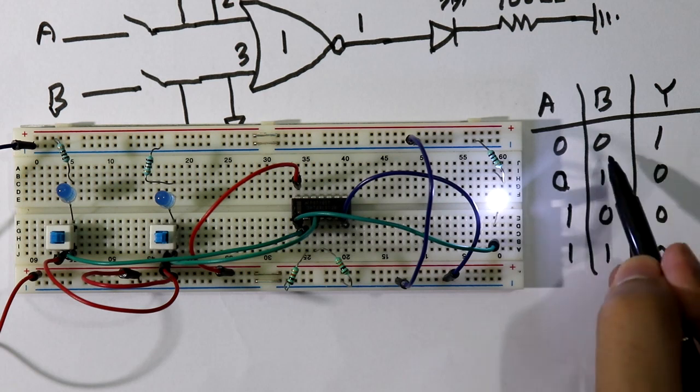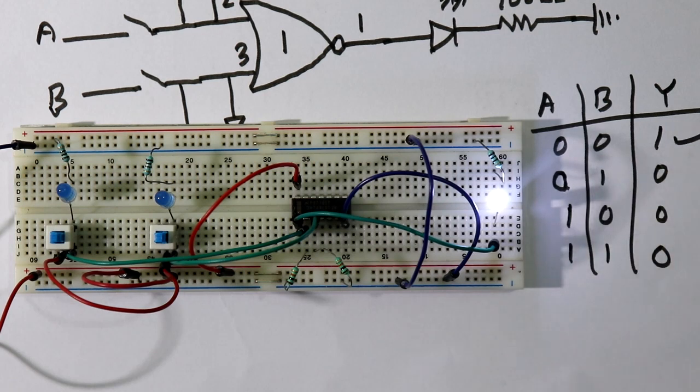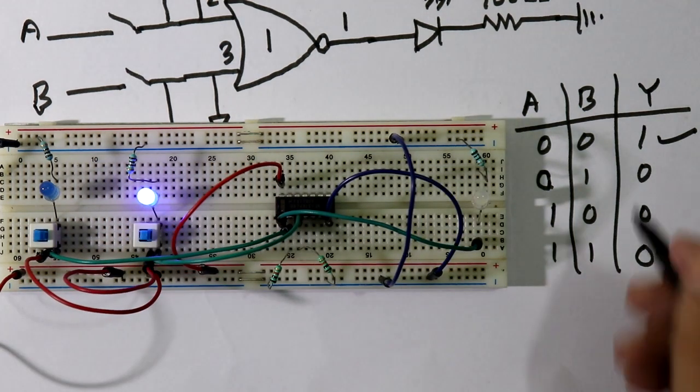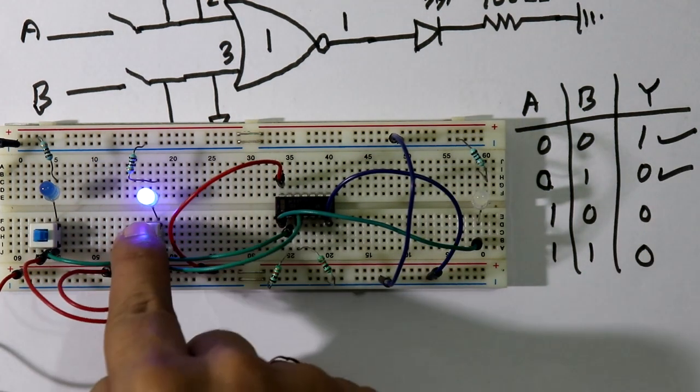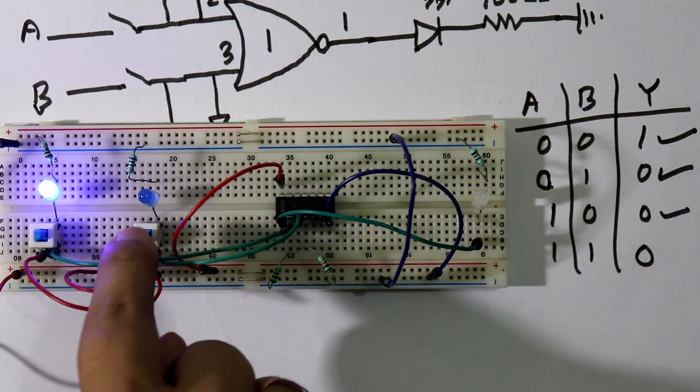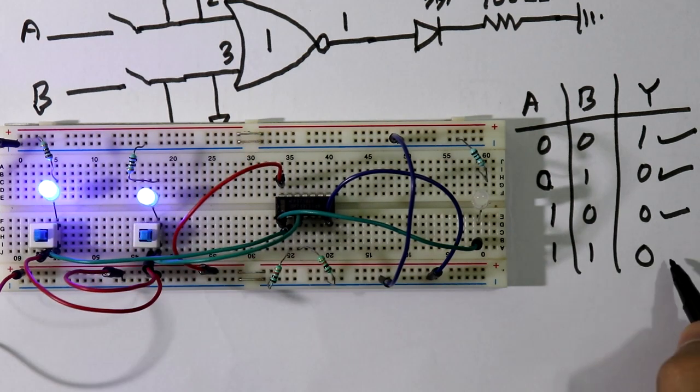Now check for 0 1, it is 0. For 1 0 we are getting 0. For 1 1 we are getting 0.